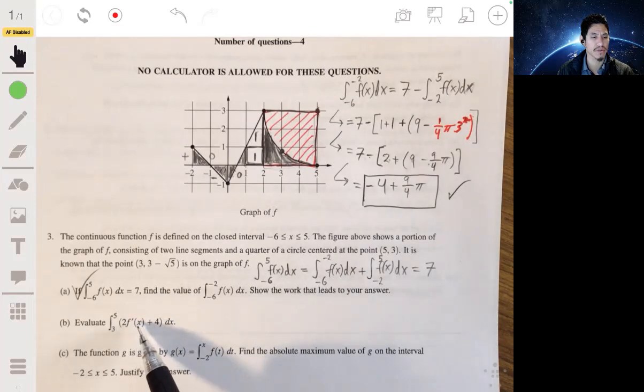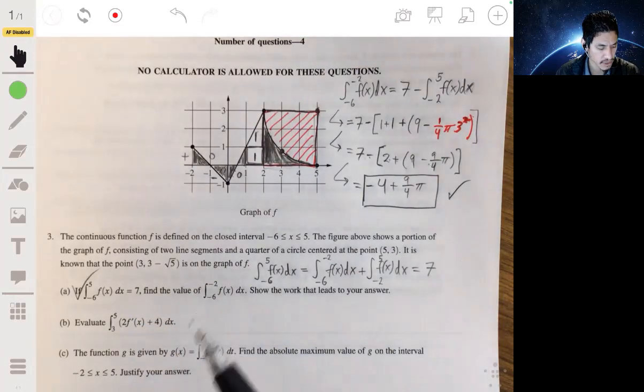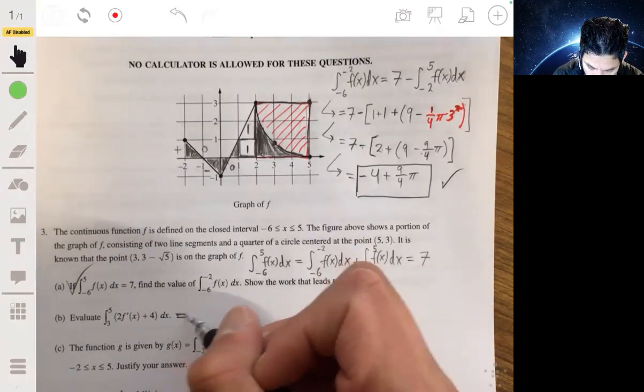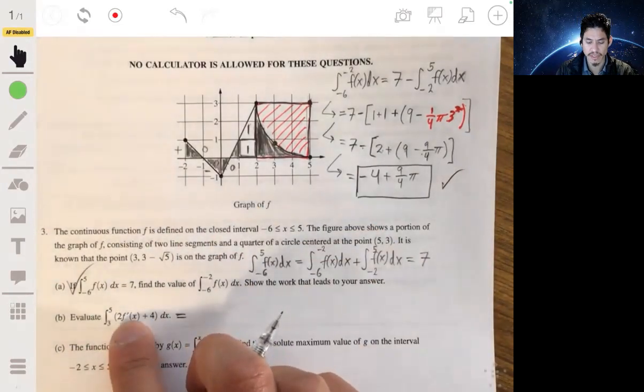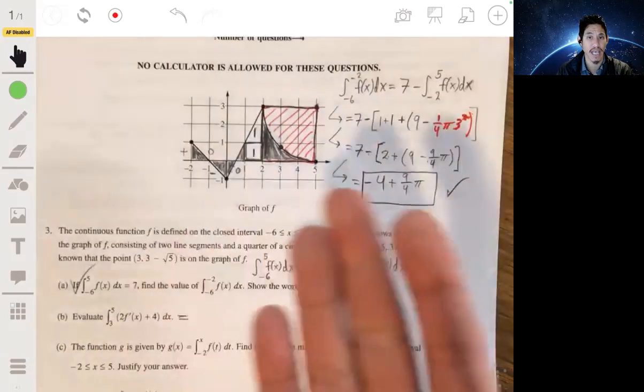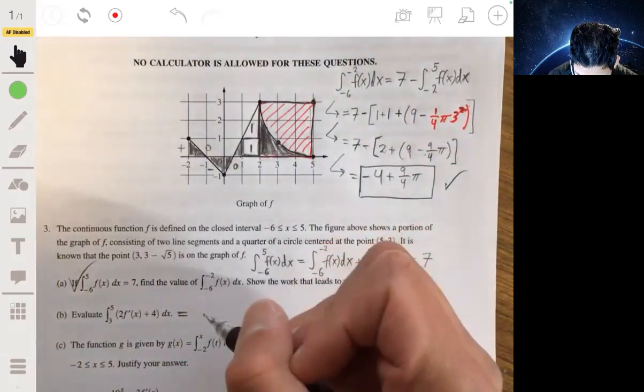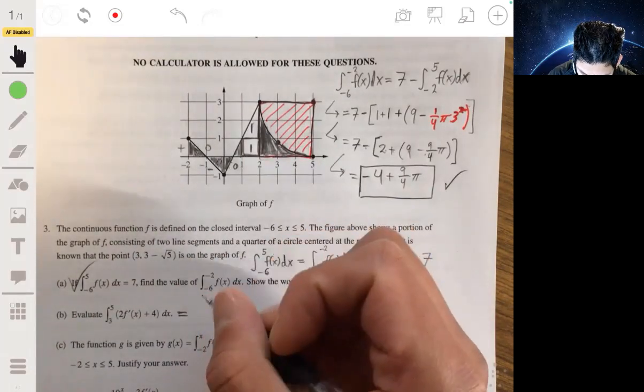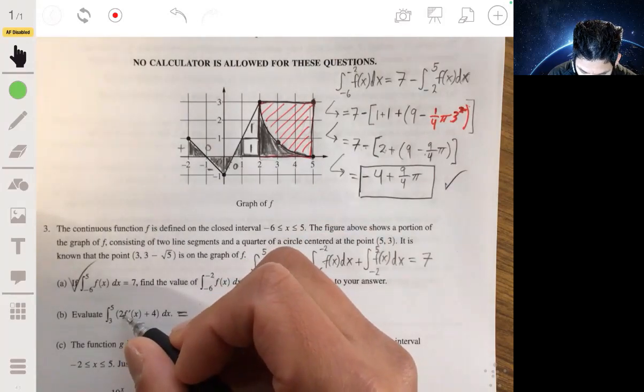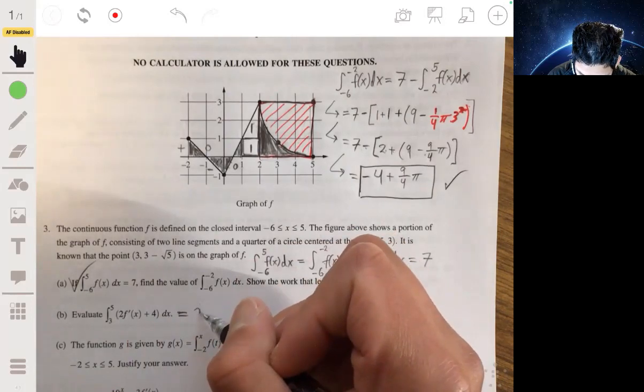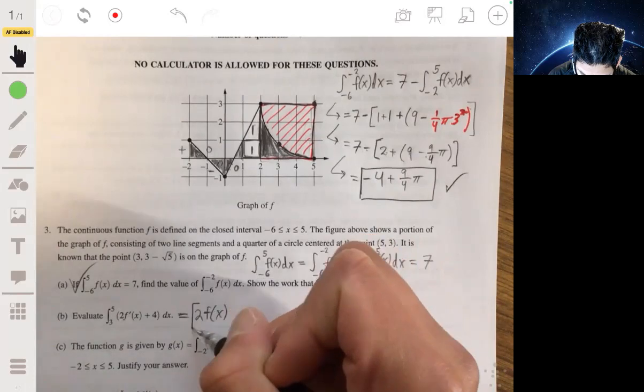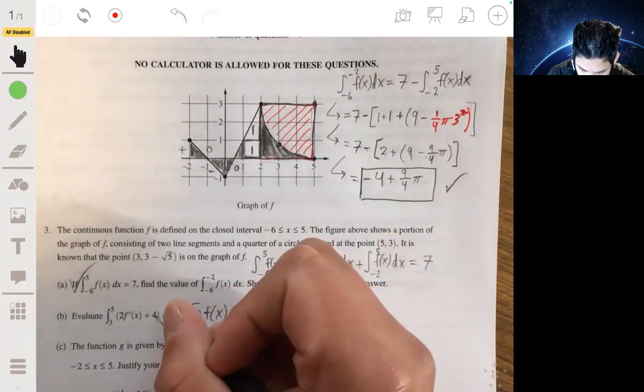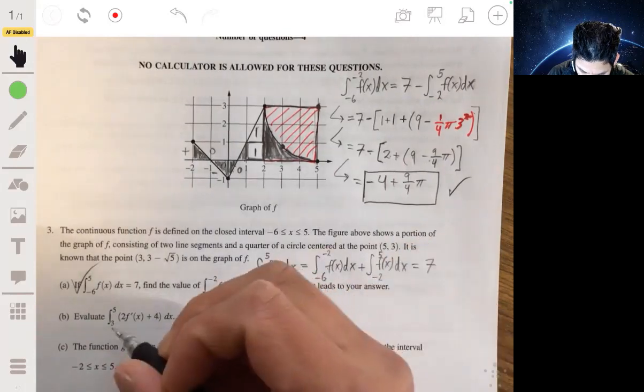Alright. Part B: evaluate the integral from 3 to 5 of 2f'(x) + 4 dx. Okay, so here, what you're going to do is set up the proper integral. But the main thing is to recognize that the antiderivative of f'(x) is just f(x). So let's go with it. We got the antiderivative of f'(x) is just f(x). So here, we're going to get 2 times f(x) plus the antiderivative of 4, so plus 4x, and we're just integrating from 3 to 5.